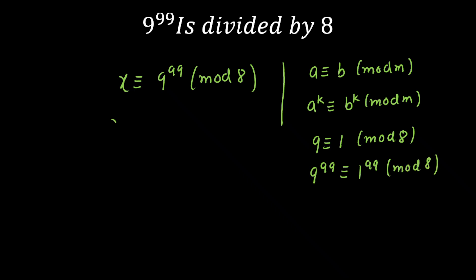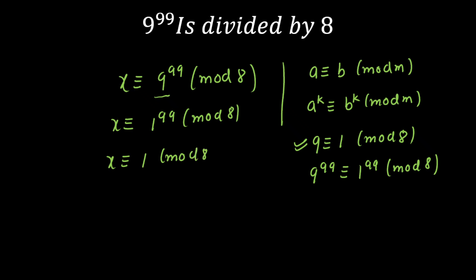Similarly, I can replace this with x is congruent to 1 raised to the power 99, modulo 8. When you want to calculate the remainder, you divide the base 9 by 8, and replace it with the remainder because of this theorem. Our final answer will be x is congruent to 1 raised to the power 99 is 1, modulo 8. So our remainder will always be 1. That will be our answer.